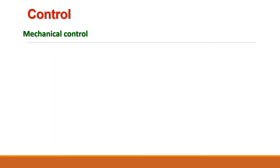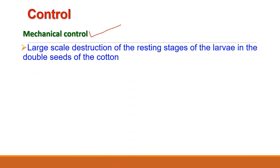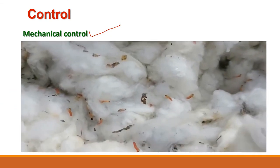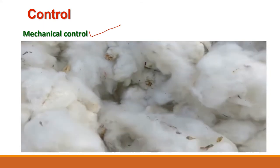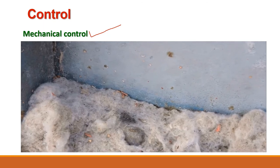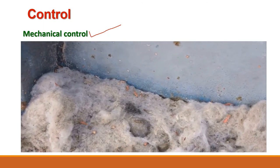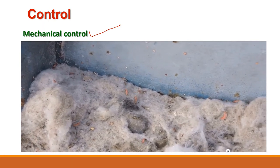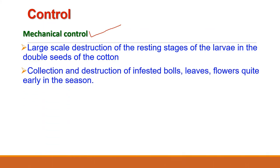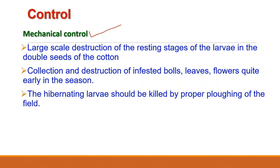For control of Pectinophora gossypiella, integrated pest management is the best strategy. For mechanical control, the most important measure is large-scale destruction of the resting larval stages in the double seed of cotton, carried out as early as possible after harvest and before distribution of cotton seeds. This can be achieved by fumigation or by exposing seeds to hot sun. Collection and destruction of infested bolls, leaves, flower buds, and flowers early in the season is also recommended. Deep plowing in February to expose hibernating larvae helps in killing them.